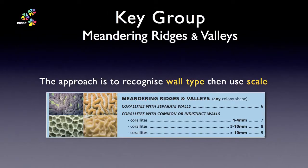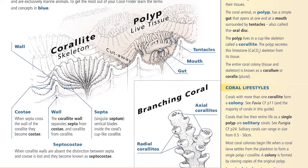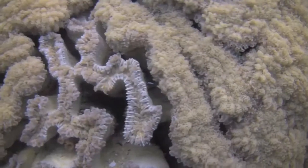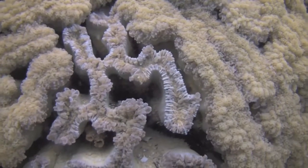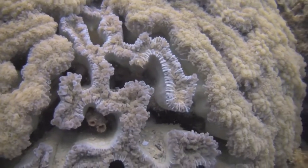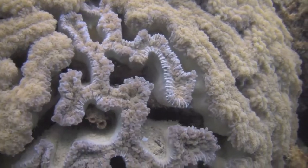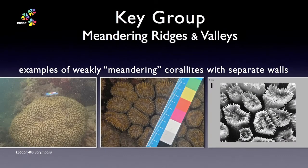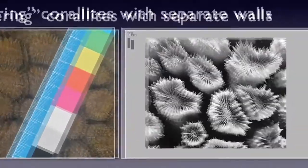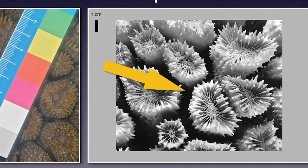The next part of the approach is to recognize the type of Coralite wall shown by your coral. They are the same terms we have already met in the glossary and earlier movies. To give you a feel, let's look at some examples of meandering Coralites with separate walls. Here we have a coral with weakly meandering Coralites. Note the short valleys and separated Coralite walls.